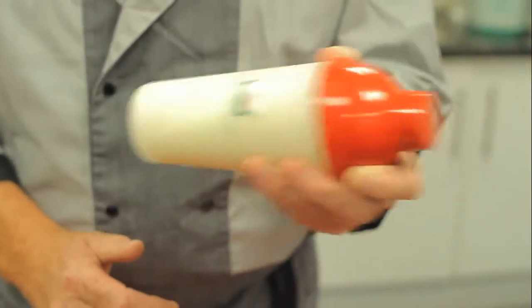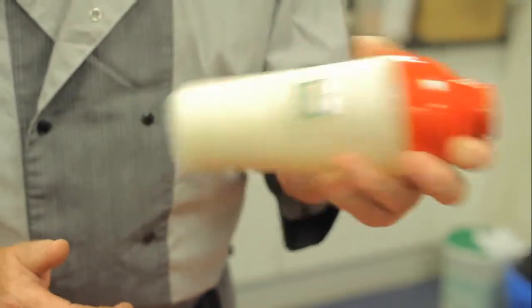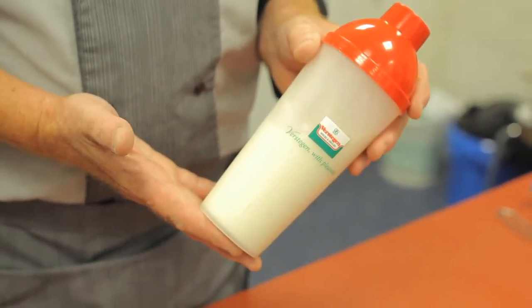One shaker mix of the batter mix is enough to coat five kilos of meat. It's very easy to shake up. There we are, within moments we've got our batter mix ready to use.